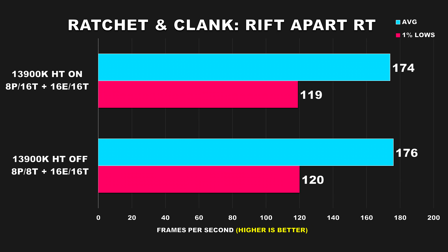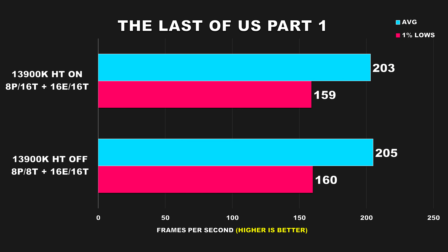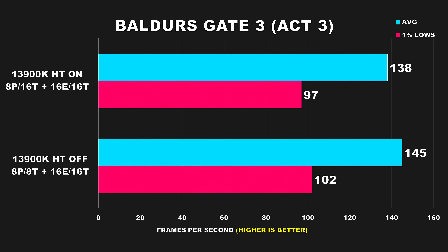Ratchet & Clank: Rift Apart shows very similar performance between both configurations. I enabled RT because of how much headroom we had, just to make things interesting, but it really didn't make any difference. The Last of Us Part 1 at 1080p with mostly high settings showed no difference with hyper-threading disabled. Up next is Baldur's Gate 3, tested in Act 3 which is known to be very CPU-heavy. The game has been getting a lot of praise but it's definitely not for its performance — it's not very well optimized. We do see a 5% difference for both average FPS and 1% lows when hyper-threading is disabled.